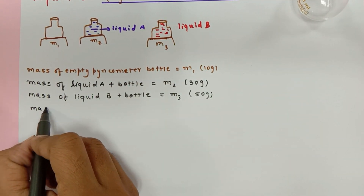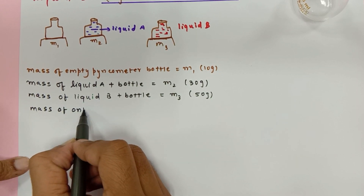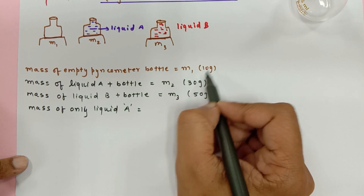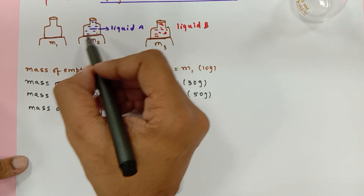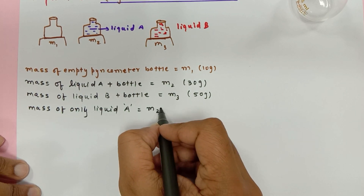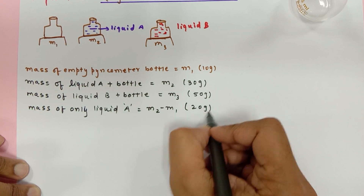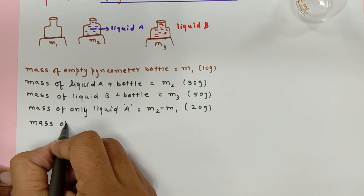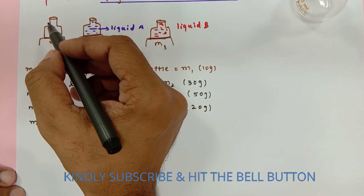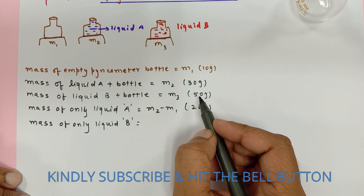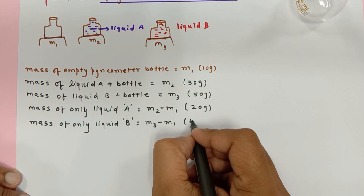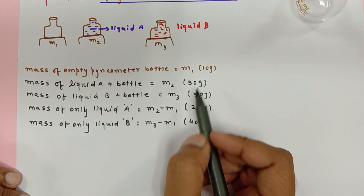If I want to find the mass of only liquid A, that will be the total mass minus the mass of the empty bottle: M2 minus M1, which is 30 minus 10 = 20 grams. In the same way, the mass of only liquid B will be M3 minus M1, which is 50 minus 10 = 40 grams.